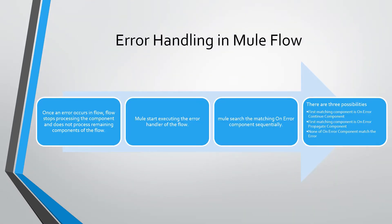At runtime, if a Mule flow gets an error, the flow stops processing components. It does not process the remaining components of the flow. Mule then starts executing the error handler of the flow, and inside the error handler, it tries to find a matching On Error component in sequence.